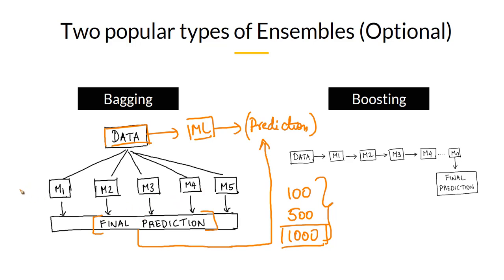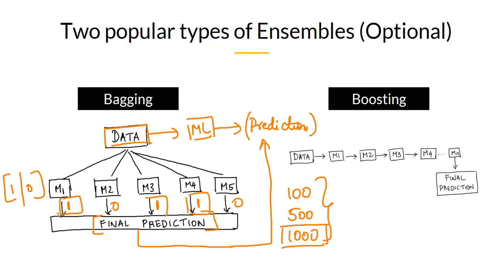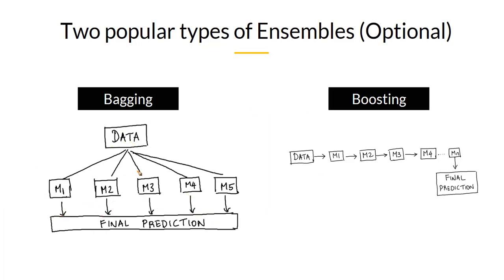Suppose the task is a classification task and you want to classify one particular row in your dataset as either one or zero. Each of these models comes up with its own prediction — this model might say one, this could say zero, this one, this one, and this zero. From these opinions, whichever prediction wins — i.e., the majority — that becomes the final prediction. In this case, one wins as it is the majority.